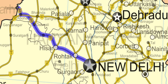The Fazilka, Abohar, Malhot section is part of New National Highway No. 7. The Malhot, Sursa, Hizar, Delhi section is part of New National Highway No. 9.